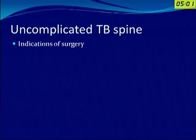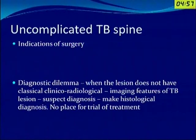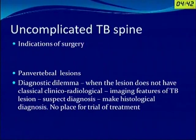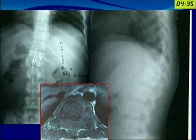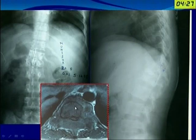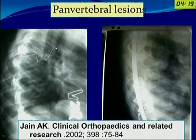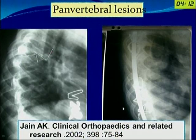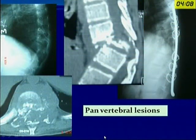For uncomplicated TB spine, the indication for surgery is a diagnostic dilemma. When a lesion does not have a classical clinical, radiological, and imaging feature of TB and there is a suspect diagnosis, make all attempts to achieve a histological diagnosis, as there is no place for a trial of treatment for TB spine. Second is a panvertebral lesion, when the disease has destroyed the anterior and posterior column of the vertebral body, or severe or progressive kyphosis. If in a case of TB spine you get an AP view showing the slightest scoliosis, we are sure we are dealing with a lesion that has destruction of the anterior body and posterior complex. These patients, if not taken care of at this time, will have spinal translation and severe neural deficit resistant to recovery in spite of good reduction — and hence this stage should be prevented.